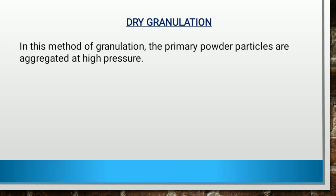In this method, the primary powder particles are aggregated at high pressure. Dry granulation is a process whereby granules are formed without the aid of any liquid solution. This process is used if the ingredients of the granules are sensitive to moisture or heat. Compaction is used to densify the powder and then further form granules.